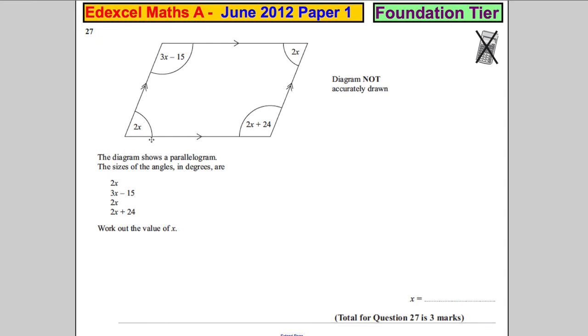Question 27: The diagram shows a parallelogram. The size of the angles, in degrees, are the following. Work out the value of x. Now there are many different ways of doing this, but I'll tell you a few ways of doing it and then I'll do it one way.